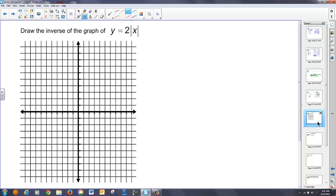So if I give you a problem like, draw the inverse of the graph of y equals 2 times the absolute value of x, let's first draw 2 times the absolute value of x. It's going to look something like this.